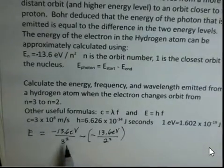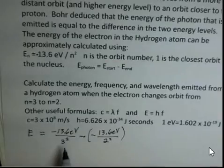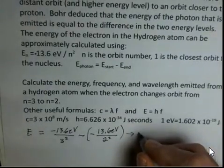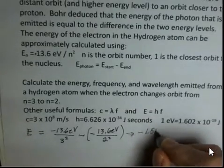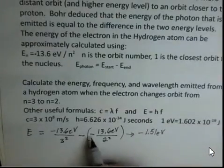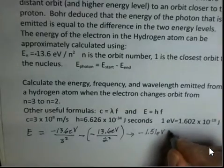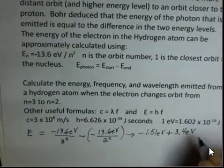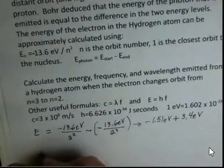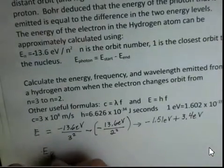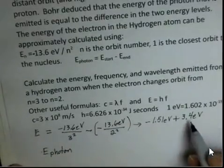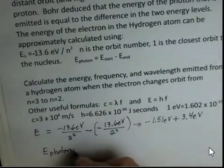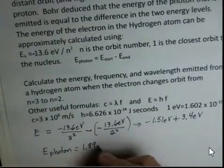So you ought to repeat this calculation on your calculator. But in doing this, I came up with a minus 1.51 electron volts minus a minus. That's going to produce a positive. So I have plus 3.4 electron volts. And the energy of the photon is 3.4 minus 1.51. And that energy is 1.89. Notice it is a positive number.